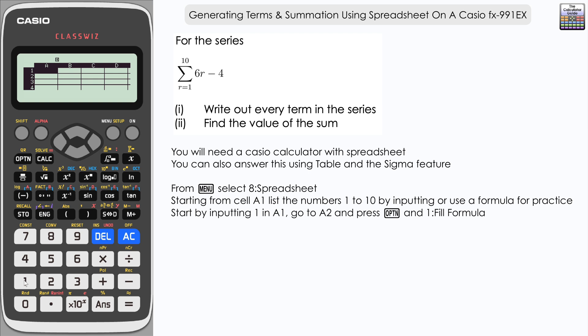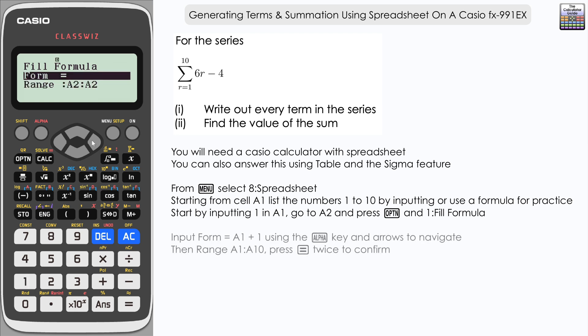Now we need to start off by inputting one in the first cell here A1, one, and then on the second cell A2 we're going to input a formula that's going to populate column A with our numbers one to ten. So from here it is option and one, fill formula, and then a formula we are going to write. Well, we're going to start off by referencing our first cell there A1, so it's alpha and A1, and then we're going to add 1, it's going to increase by 1 each time.